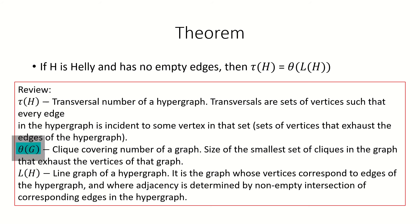The clique-covering number is the size of the smallest clique covering in a graph, which is a set of cliques in a graph whose union is the vertex set of that graph. The line graph of a hypergraph is an ordinary graph whose vertices correspond to the edges of the hypergraph, and where two vertices are adjacent if their corresponding edges in the hypergraph have a non-empty intersection.